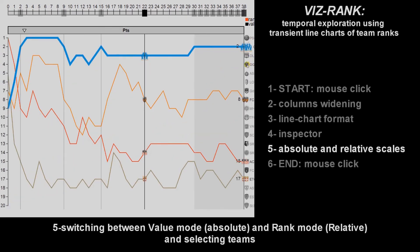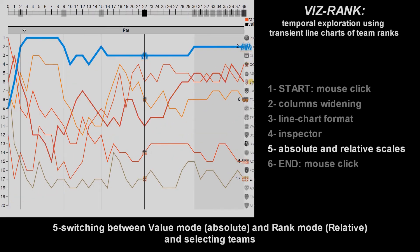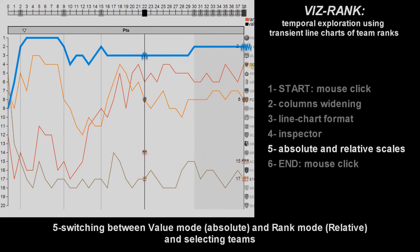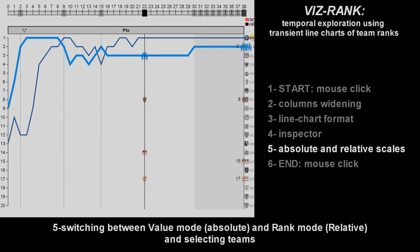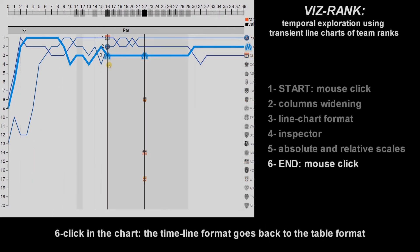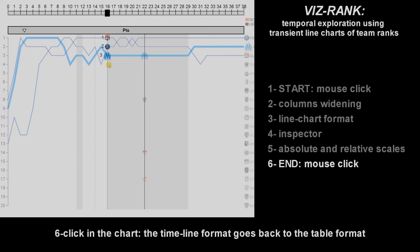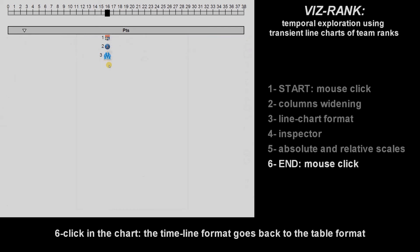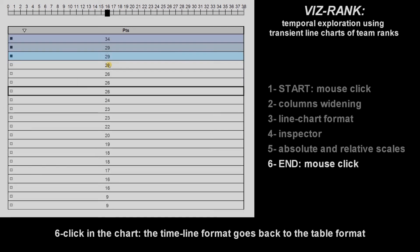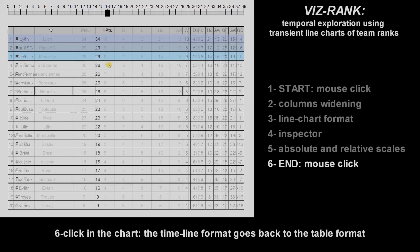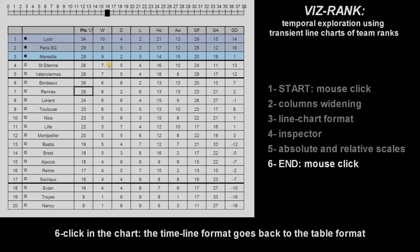The user can also select or unselect teams to show or hide their corresponding line chart. Finally, clicking the overview chart transforms it back into a table using the inverse transition, with the selected time value.